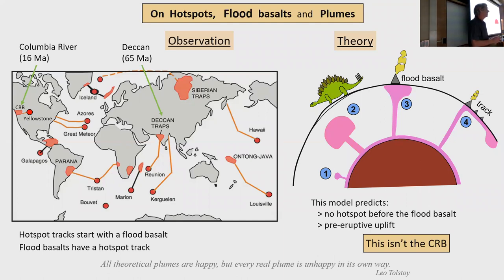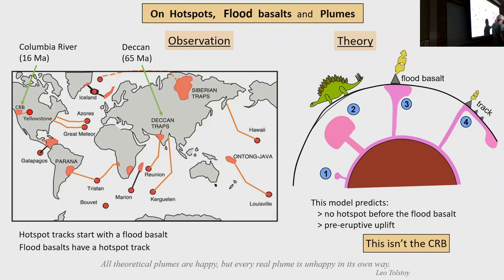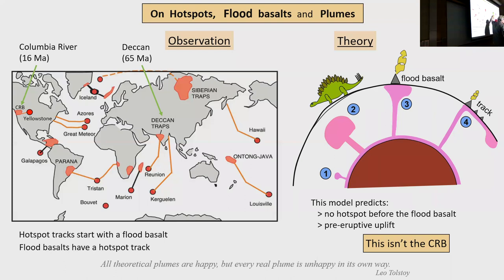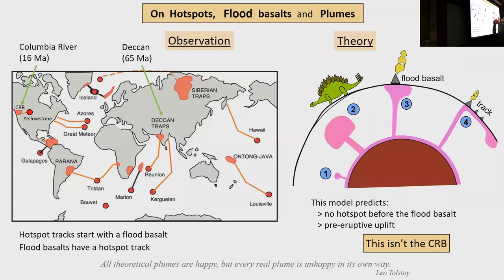Maybe 'anytime' is a slight exaggeration, but you get the idea. A very simple model was created: at the core-mantle boundary, you form low-viscosity, buoyant mantle — a plume head — that starts to rise. As it gets near the surface, before eruption, it pushes up on the surface creating uplift. Then it hits, you get a flood basalt, and as the plate moves, you see a hotspot track.